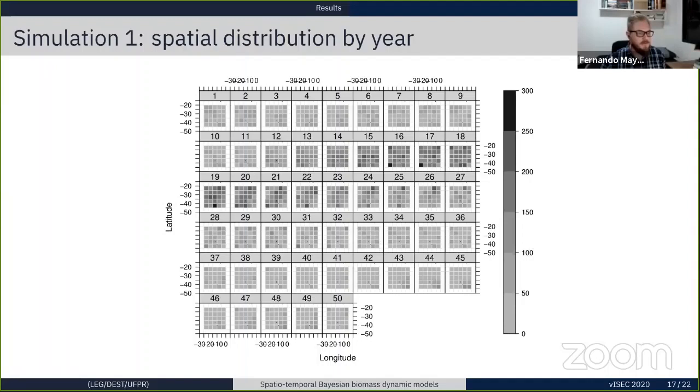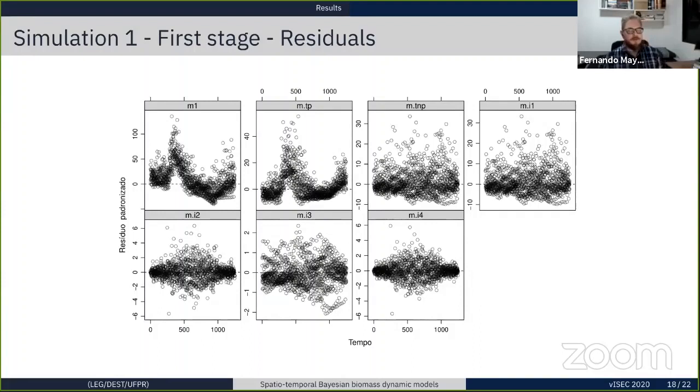The result of the seven models in the first stage show that clearly the spatial-temporal interaction should be considered, as we can see here by the residuals. The last three figures here are from the models with space-time interaction, so clearly you can see that they perform better. Also, measures like AIC agreed with this result.